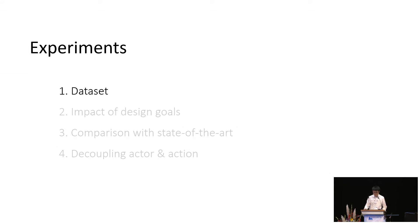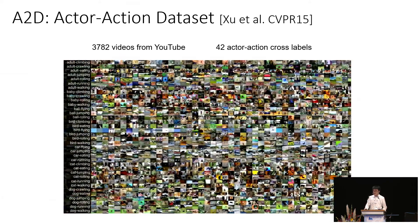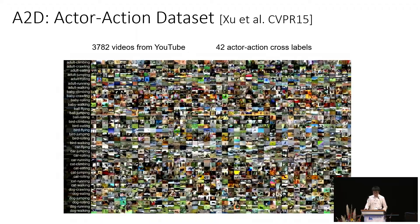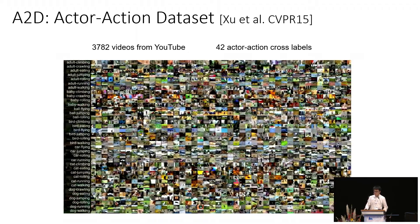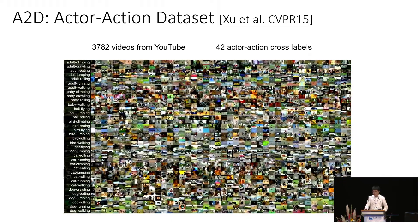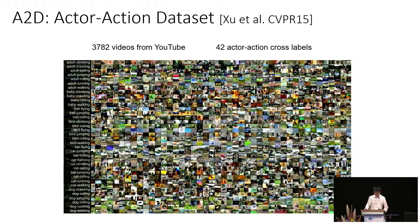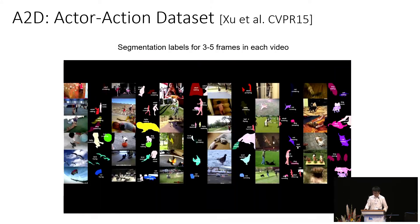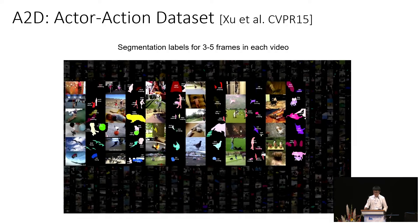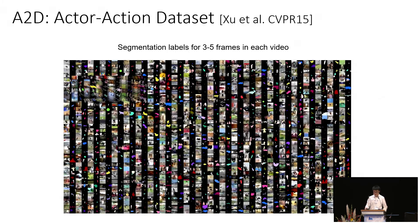Now we have the details of our model. We conduct several experiments to validate our approach. In terms of dataset, we use the actor action dataset introduced by Xu et al. The dataset provides 3,782 videos from YouTube and 42 actor action class labels. Here we show some of the segmentation annotations that the dataset provides. The segmentation masks are provided for three to five frames in each video.